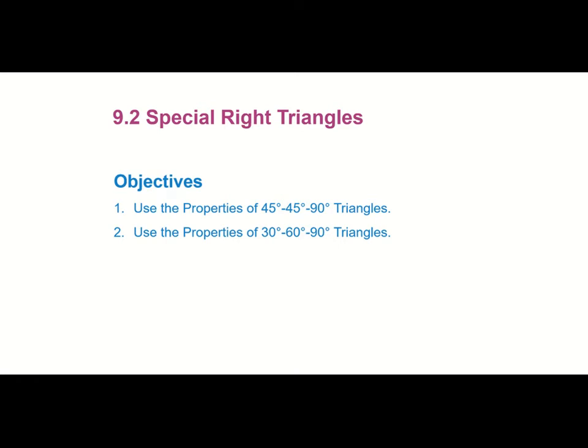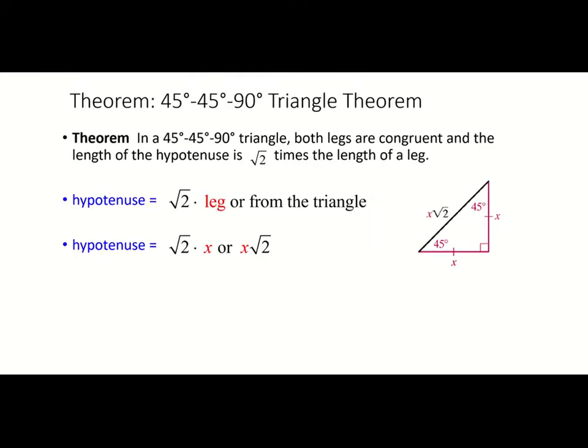Hi everybody, this is section 9-2 for our Math 211 Geometry textbook, and it is for special right triangles. We're going to look at the properties of 45-45-90 triangles and 30-60-90 triangles.